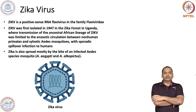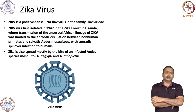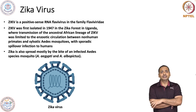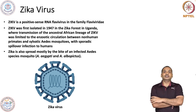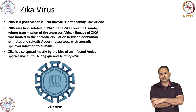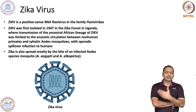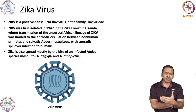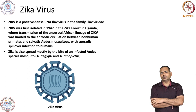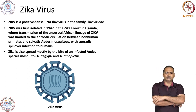Zika is also spread mostly by the bite of infected Aedes species — specifically Aedes aegypti and Aedes albopictus. These are the two key mosquito species that basically transmit the virus.